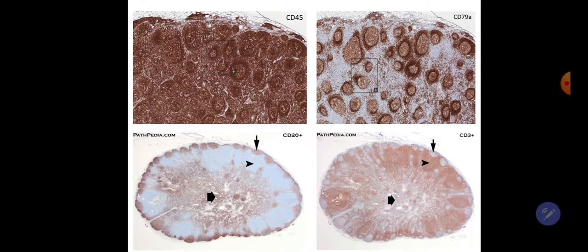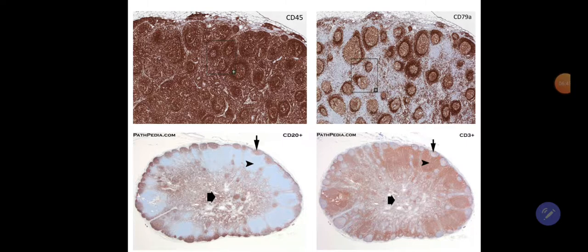CD79 will stain B cells present in the germinal center, marginal zone, mantle area, and parts of the medulla. The three essential markers for B cells are CD20, CD19, and CD79. CD20 also stains the germinal center, marginal area, mantle area, and part of the medulla due to memory B cells. CD3 is positive for T cells and will stain the T cell area; the mantle area, marginal zone, and parts of the medulla containing B lymphocytes will be CD3 negative.